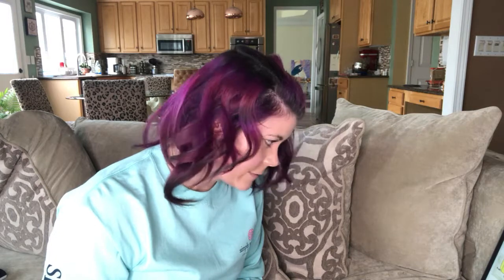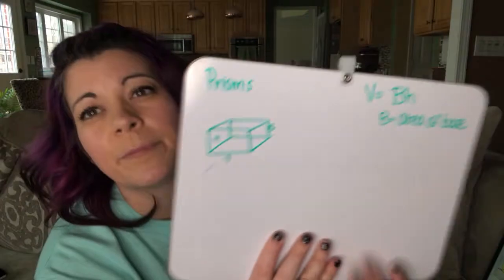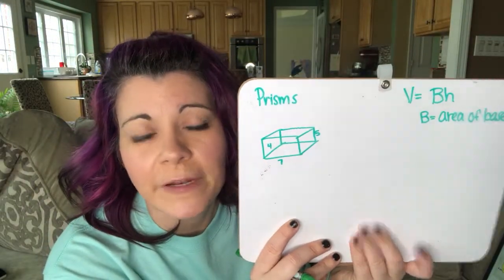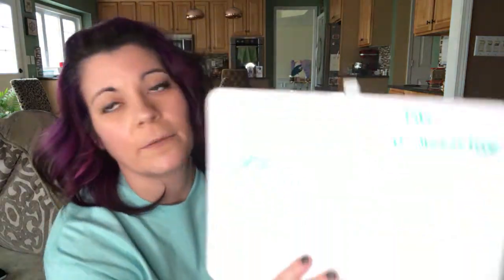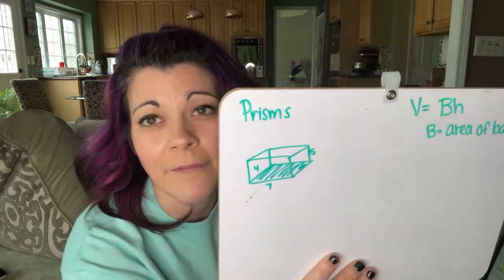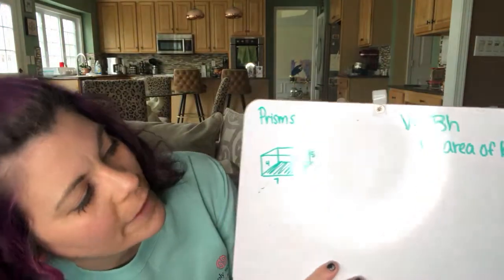So four, seven, and then five. We have a prism here, and you see that it's four, seven, and five. I'm going to highlight the base, because that's what we need to do. We need to find the area of that base, and so that base is a four by seven.